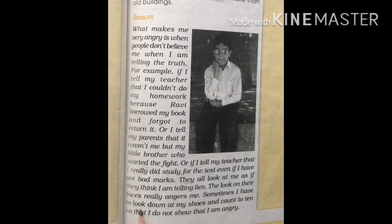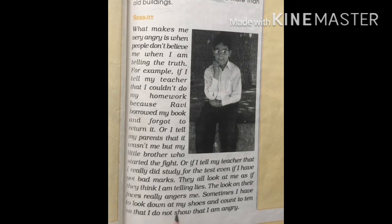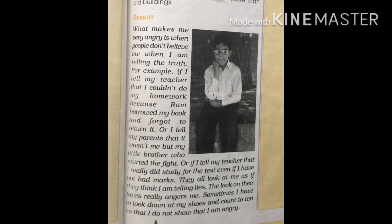Sometimes I have to look down at my shoes and count to ten so that I do not show that I am angry. So what does he do when he becomes angry? He looks down at his shoes and counts one to ten — to not show that he is angry — ताकि दूसरों को पता न चले कि वो गुस्सा कर रहा है.